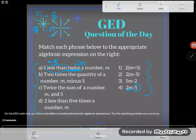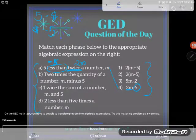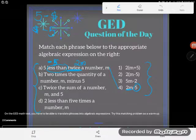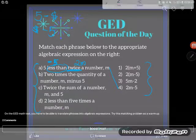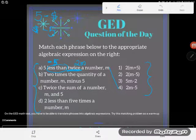So A, five less than twice a number M, I could write that as 2M minus five. So nice. Let me just erase this so you can see the minus sign on it. So 2M minus five. Now let's take a look at the next one.